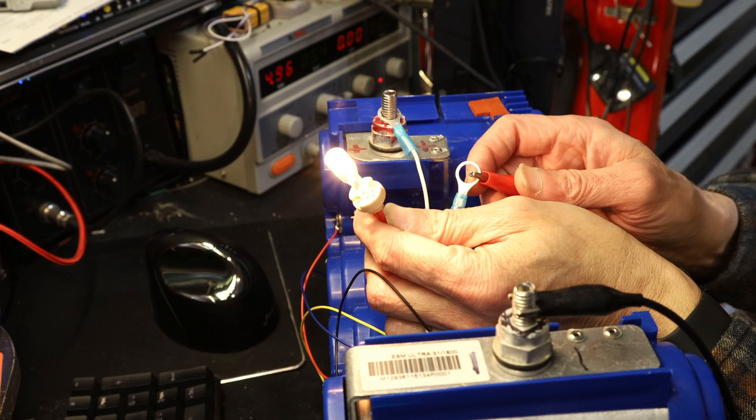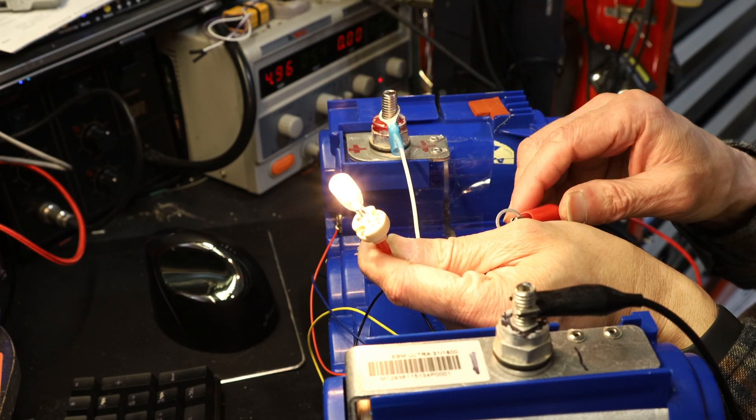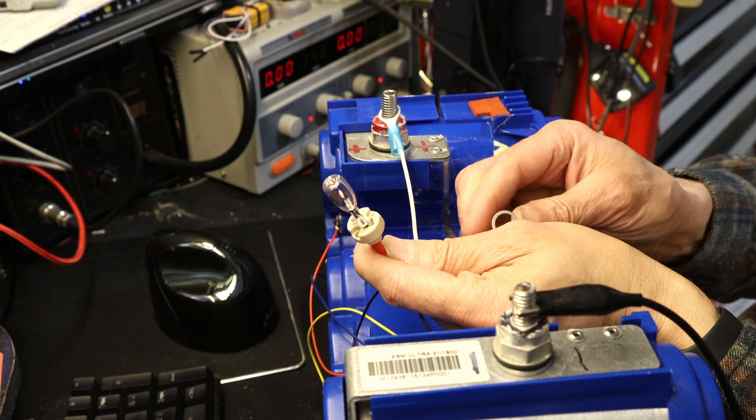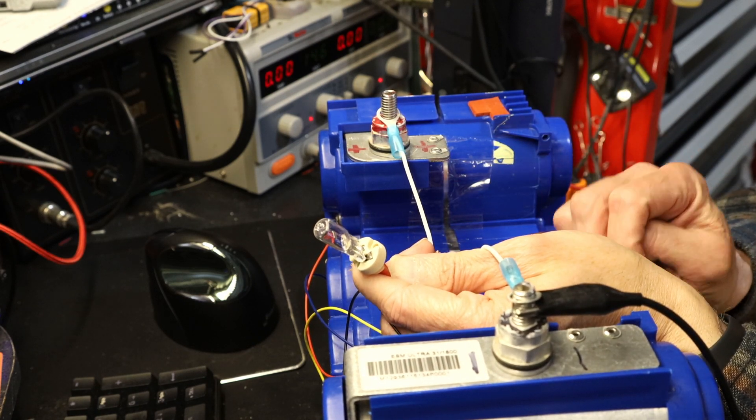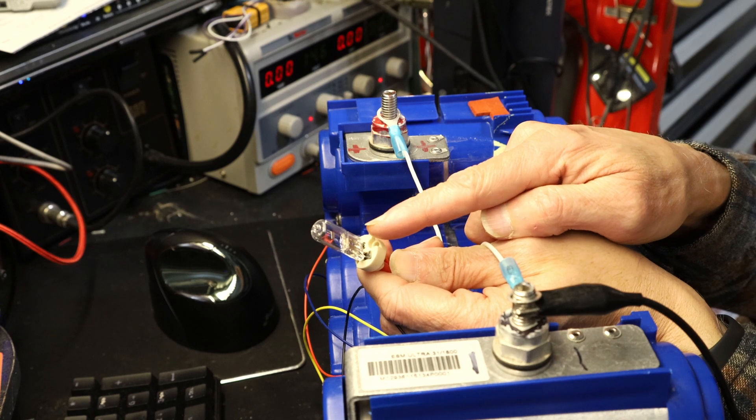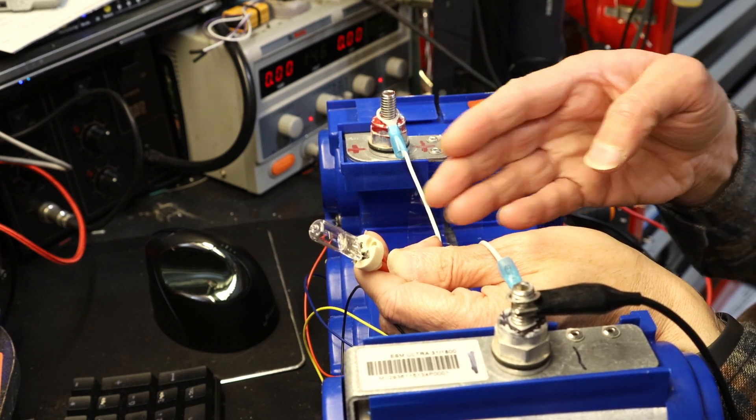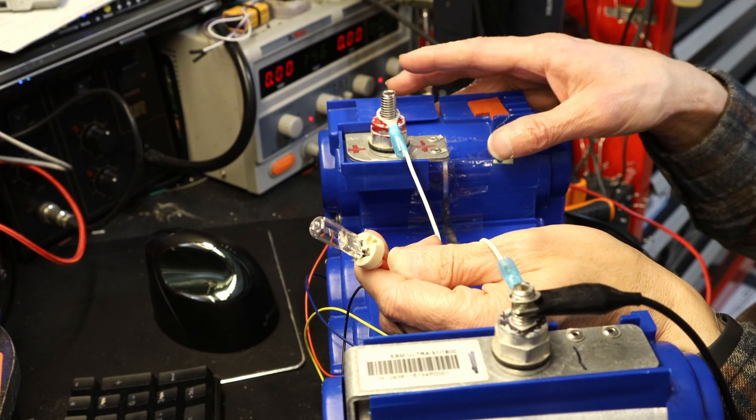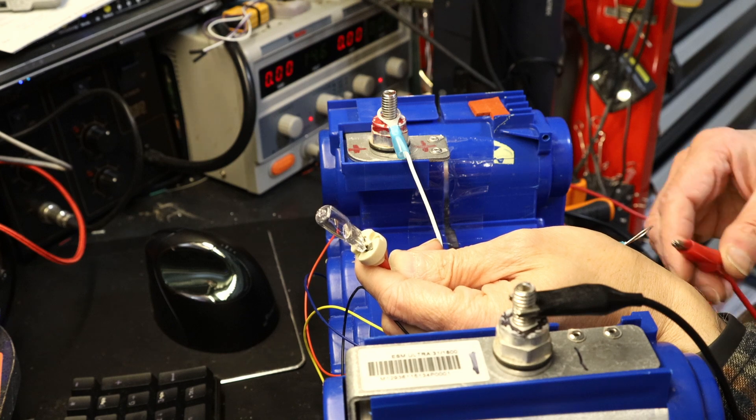Now if you want to discharge the capacitor for shipping or for whatever reason you need to discharge it, then you simply hook this to the other terminal like this. Now why didn't the light come on? Because this still doesn't have enough voltage. It takes hours for this to fill up in order to give it back.